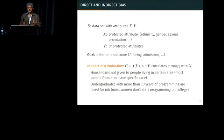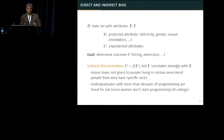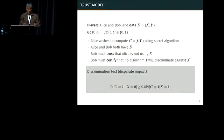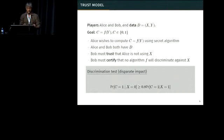The topic I want to discuss is how do we detect potential indirect discrimination? We're not trying to determine intent — we're trying to determine where this could be happening as an outcome. In the trust model: you have two players, Alice and Bob, and data consisting of tuples with two attributes, X and Y. The goal is some binary classification task C. Alice wants to compute C using some proprietary algorithm for hiring or loan giving. Bob wants to certify that there is no way that Alice can be discriminating, even though Bob does not have access to Alice's algorithm. Bob will trust that Alice is not using X directly, but he wants to determine indirect discrimination.